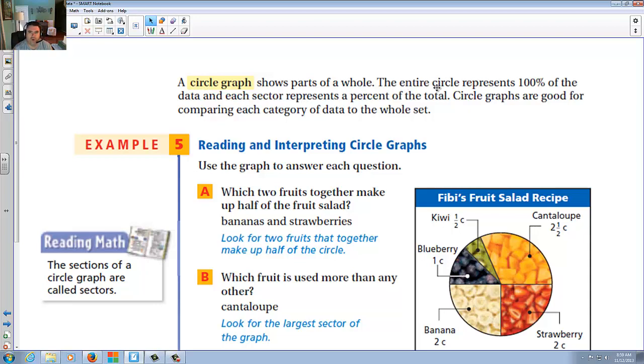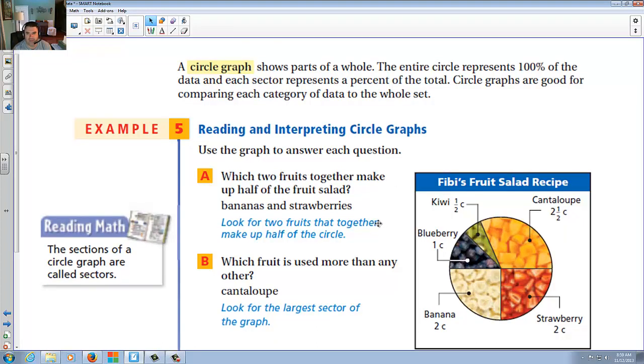Circle graph shows part of a whole. The entire circle represents one hundred percent of the data and each sector represents a percent of the total. In other words, simply it's a pie chart. How much does each one get? So in this case here, which two fruits together make up half the fruit salad? Well, in other words, look for the two fruits that together make up half the circle. Well, these two here form half. So I would say banana and strawberry. Which fruit is used more than any other? What's the biggest slice? Which is cantaloupe?